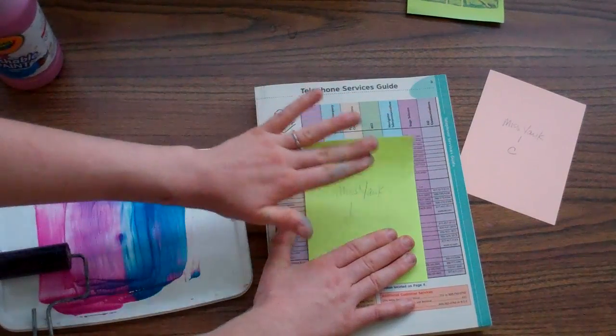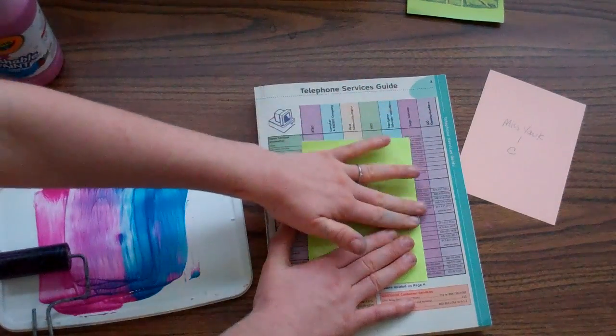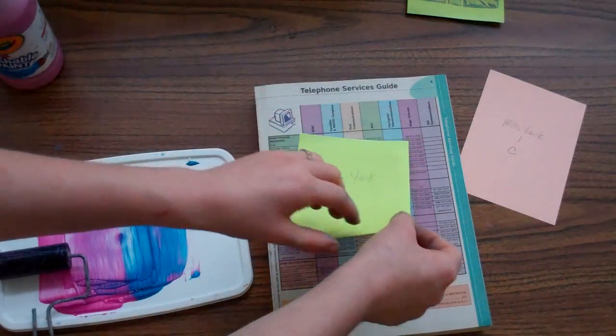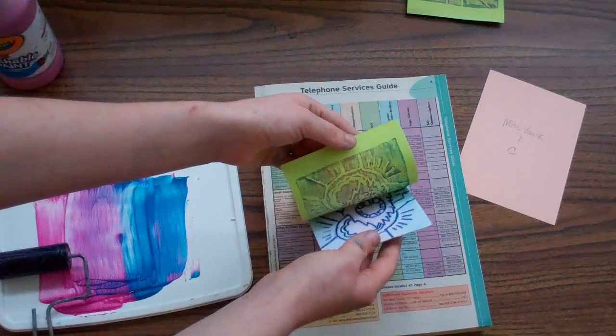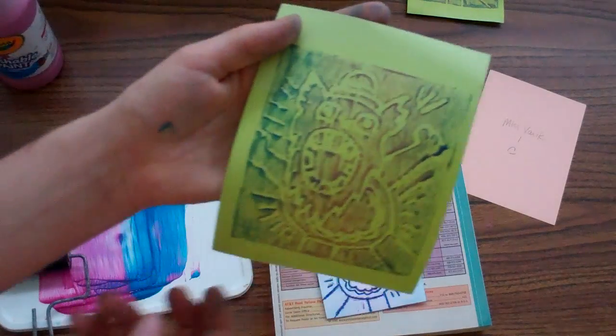I'm kind of pressing with a lot of pressure as I'm doing this. Alright, it looks like everything is pressed down pretty good. Then I like to grab one corner and slowly start peeling my paper up. I kind of like that print just as much as my first one.